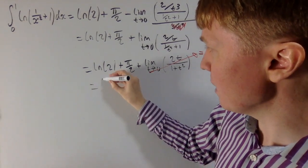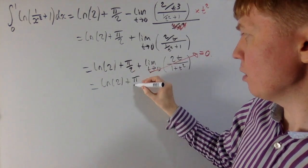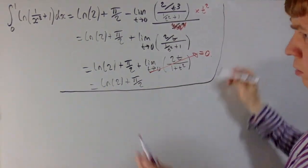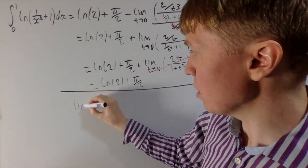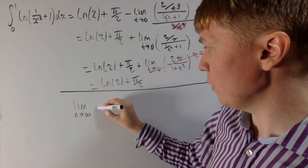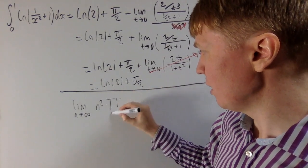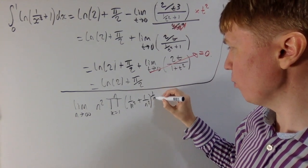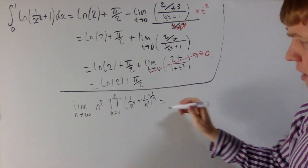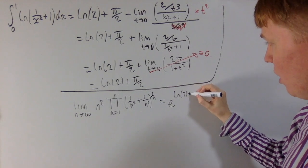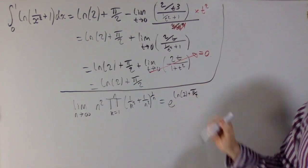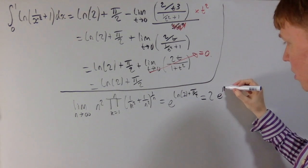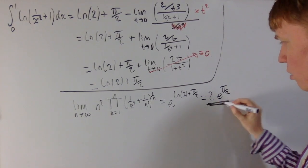So our integral is equal to ln 2 plus π/2. But don't forget that the original limit we were trying to calculate wasn't equal to the integral — it's equal to e to the power of this integral. So to conclude: the limit as n goes to infinity of n squared multiplied by the product from k equals 1 to n of (1 over k squared plus 1 over n squared) all to the power of 1 over n equals e to the power of ln 2 plus π/2. This gives e to the power of ln 2 times e to the π/2, which equals 2e^(π/2).